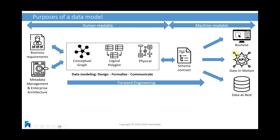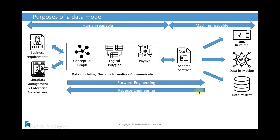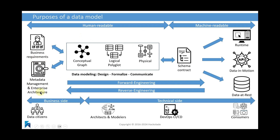Or, in a second use case, you build your model by connecting to an instance, reverse-engineer it to fetch the schema, and produce an entity relationship diagram that you can then enrich with description, comments, constraints, and other metadata that might be useful for your governance and data community.